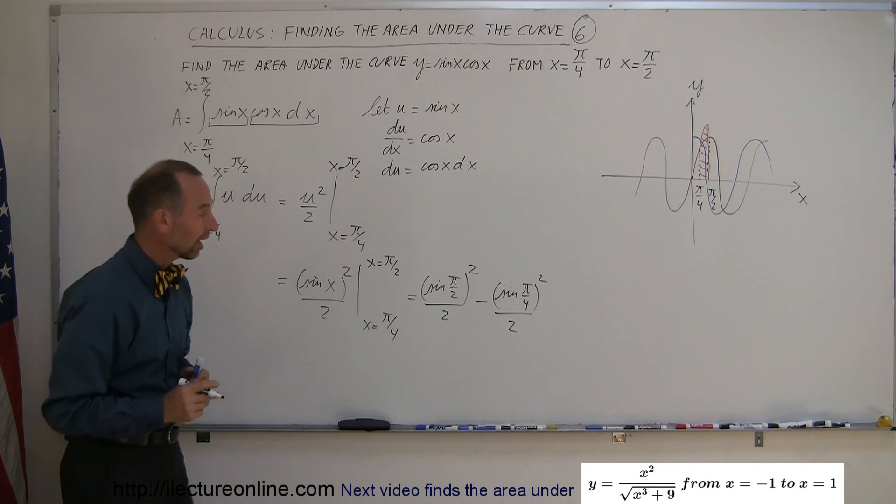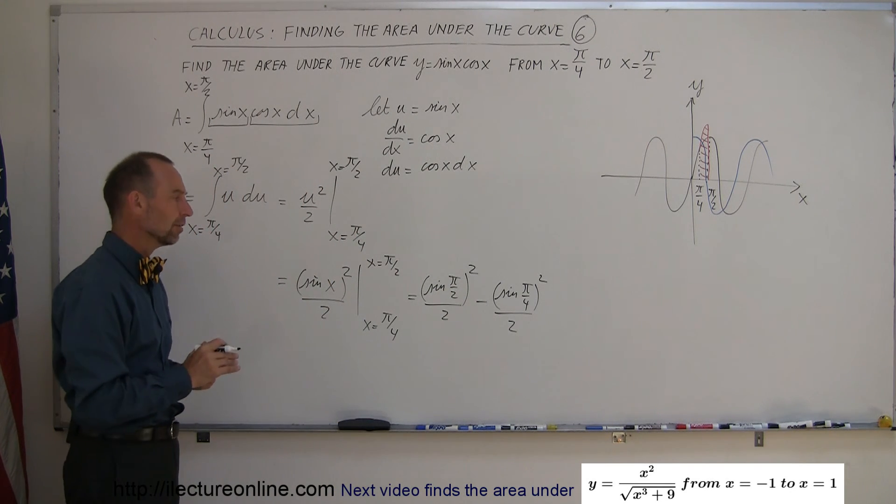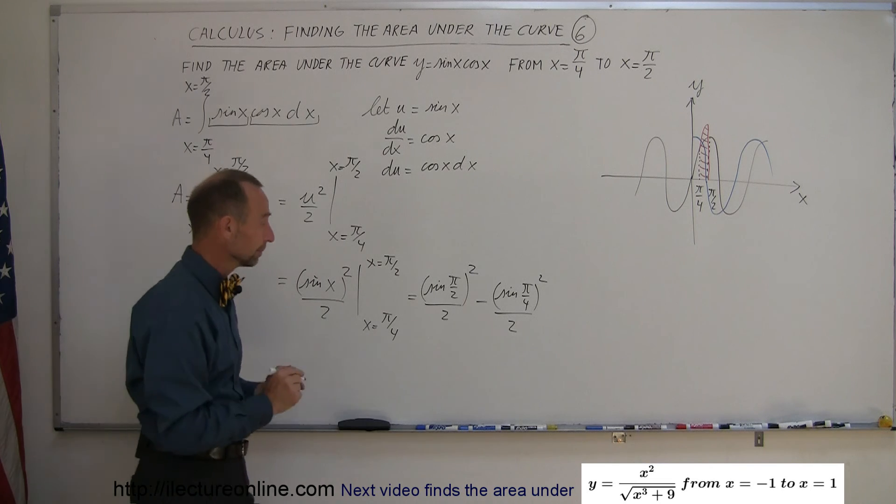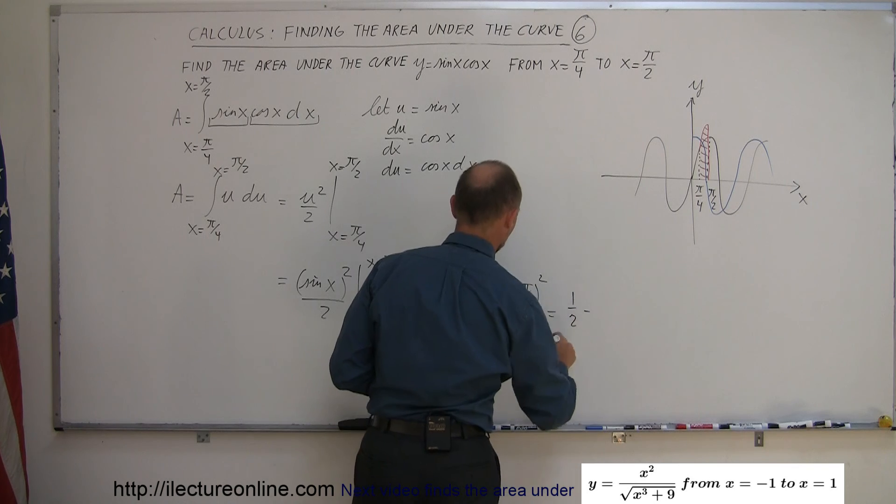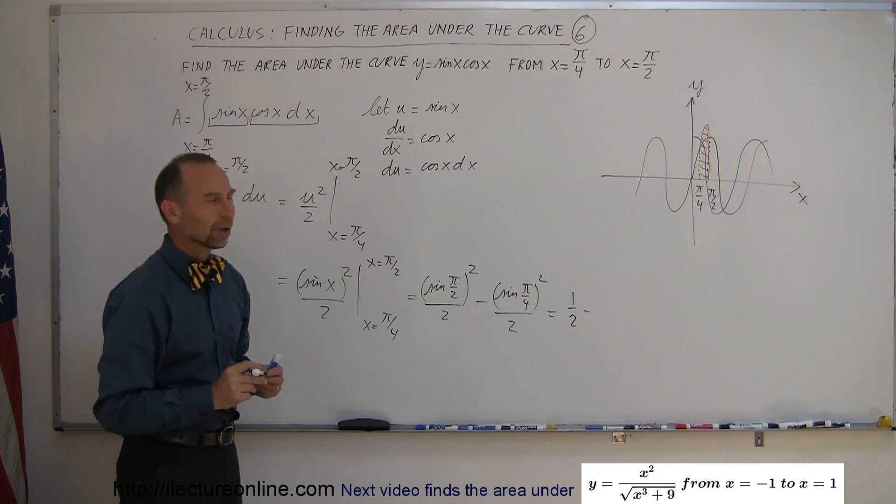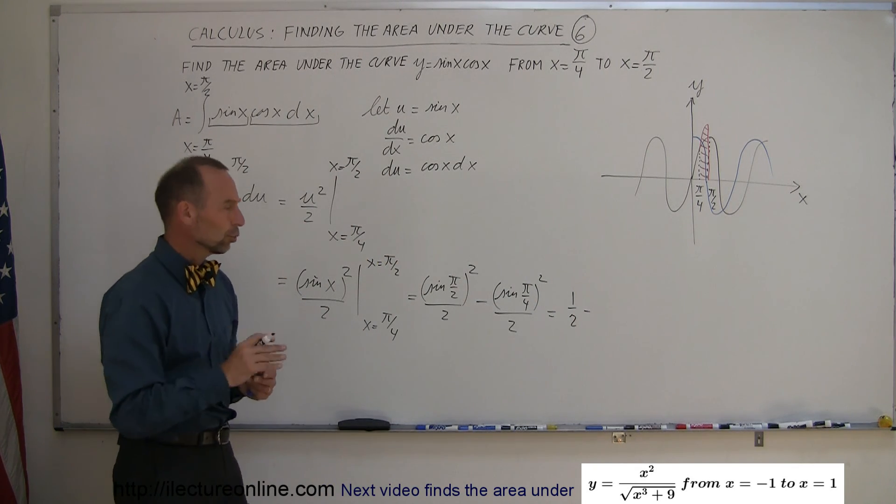All right, now, what is the sine of pi over 2? Pi over 2 is 90 degrees. The sine of 90 degrees is 1. So, this would be 1 squared over 2 or 1 half minus the sine of pi over 4, that's 45 degrees, which is the square root of 2 over 2.